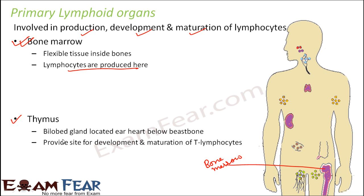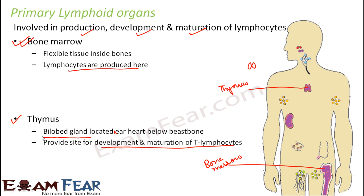The thymus is a bilobed gland located near the heart, just below the breastbone. It is the site for development and maturation of lymphocytes. Lymphocytes are born in bone marrow and develop and mature in the thymus, which is why they are called T-lymphocytes — thymus lymphocytes. Regarding size, at birth the thymus gland is quite large, but it gradually decreases in size, becoming very small by puberty and adolescence.